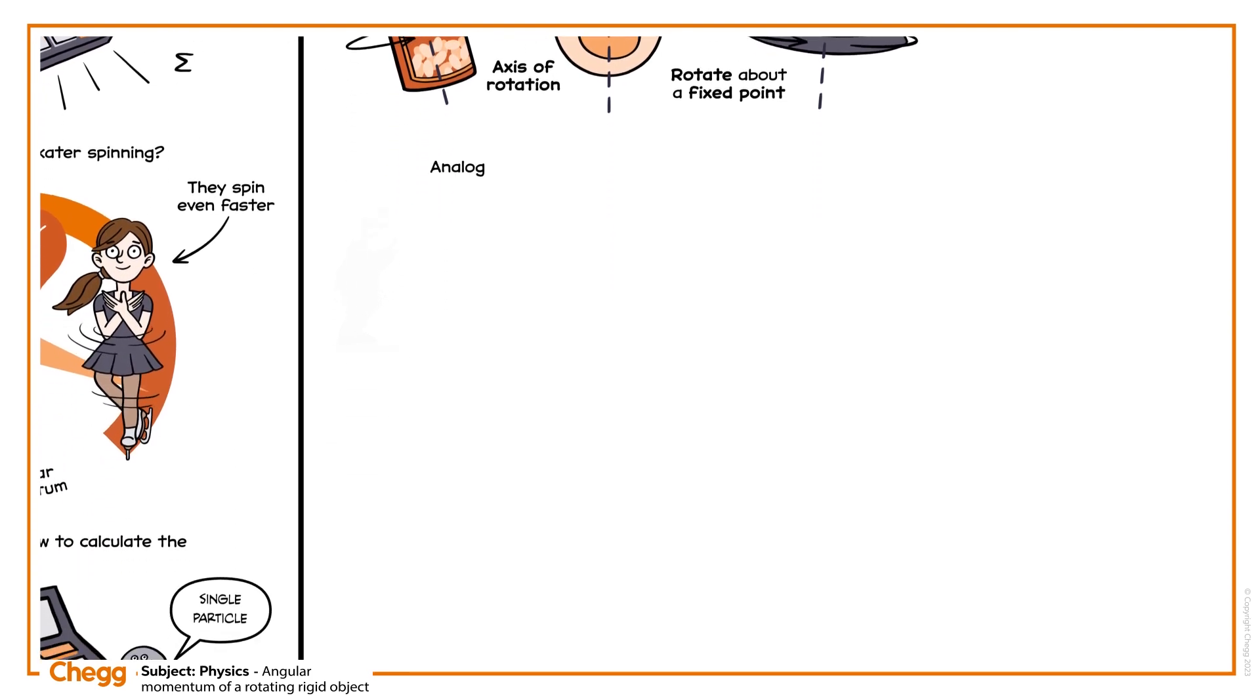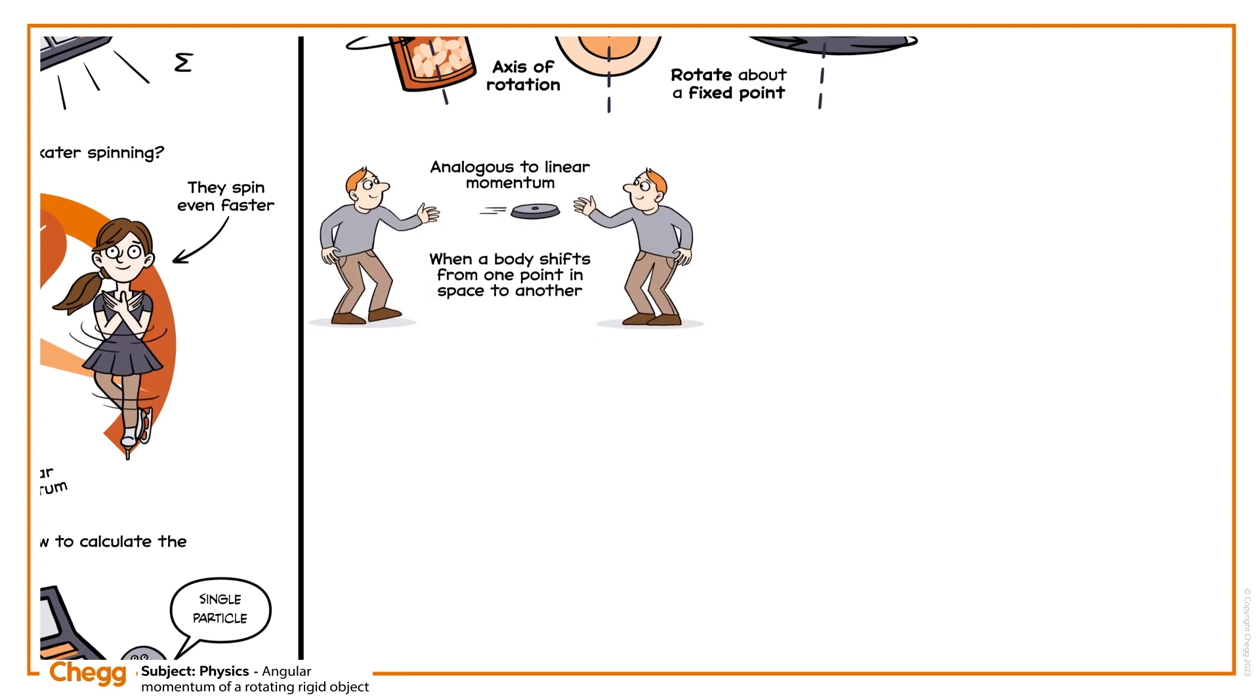Angular momentum is analogous to linear momentum when a body shifts from one point in space to another. We can relate angular momentum, vector L, to the linear momentum, vector P, of a rotating object with the following equation.